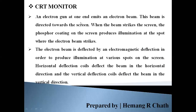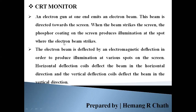The electronic gun at one end emits an electronic beam. This electronic beam is directed towards the screen. When the beam strikes the screen, the phosphorous coating on the screen produces illumination at the spot where the electronic beam strikes.